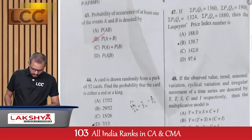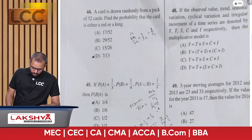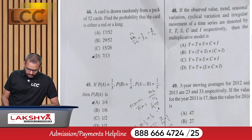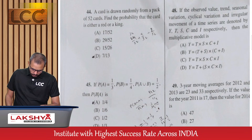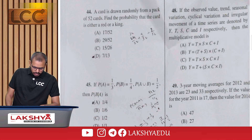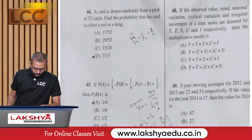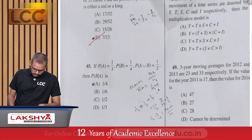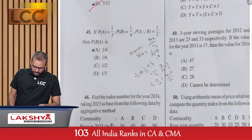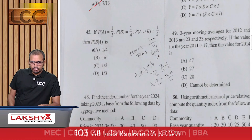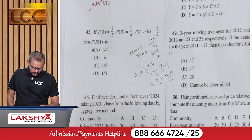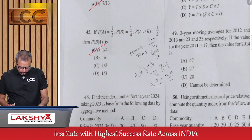Question 44: A card is drawn from a pack of 52 cards. Find the probability that it is either a red card or a king. Apply the addition theorem — option D. Question 45: If P(A) = 1/3, P(B) = 1/4, and P(A ∪ B) = 1/2, find P(B|A) — option A.